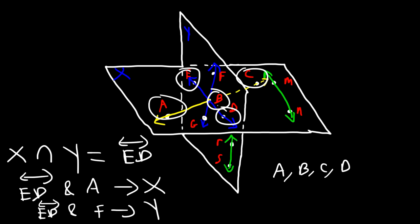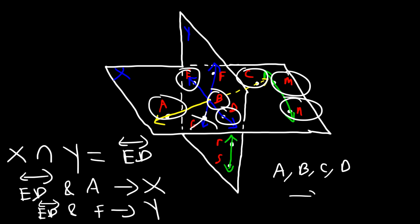E is in plane X, but G is not — G is in plane Y. M and N are in plane X. So the answer is E, M, and N: they are coplanar with A, B, C, and D on plane X.